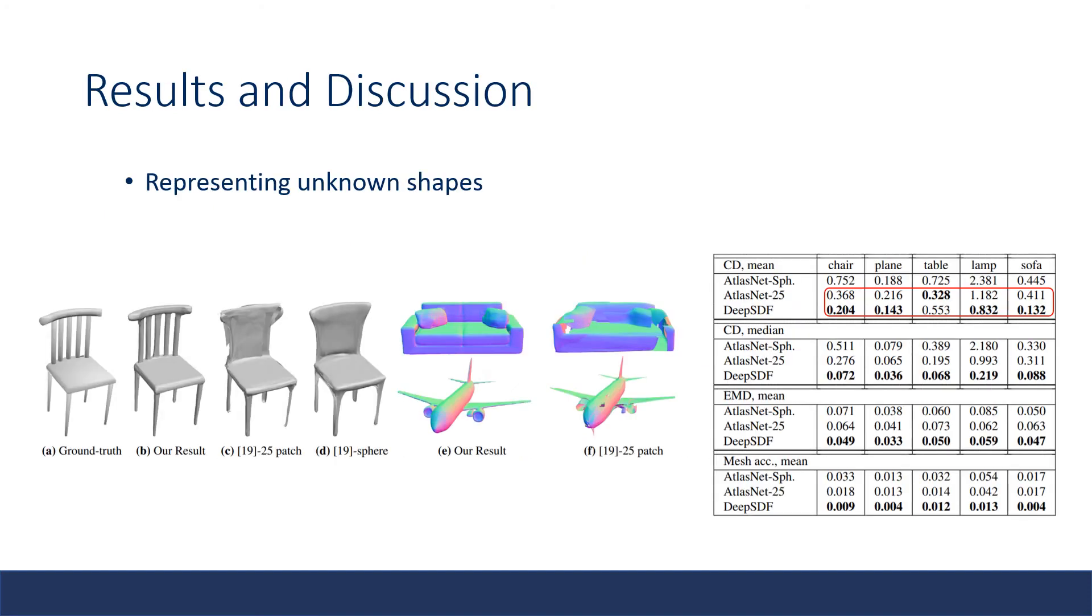Now let's look at some results. Although deep SDF extracts the shape code by optimization at inference time, it can effectively generalize to unseen shapes. The authors show that their method significantly outperforms AtlasNet on a wide variety of shape classes and metrics as shown in the table below, which agrees with our observation here.